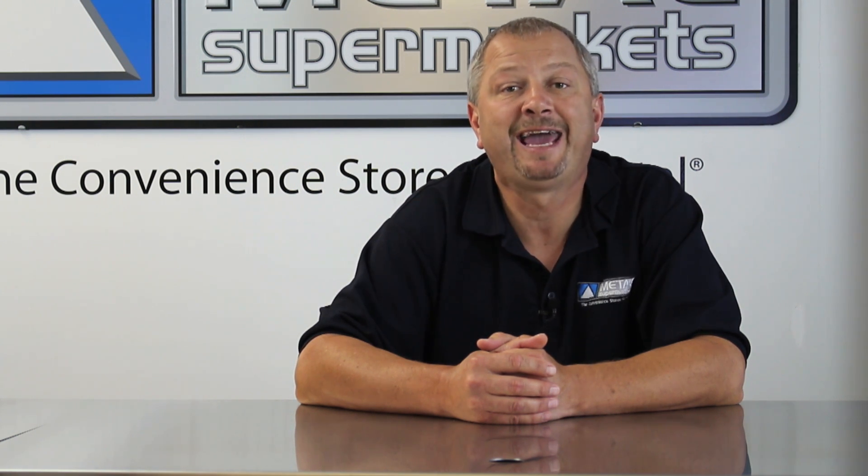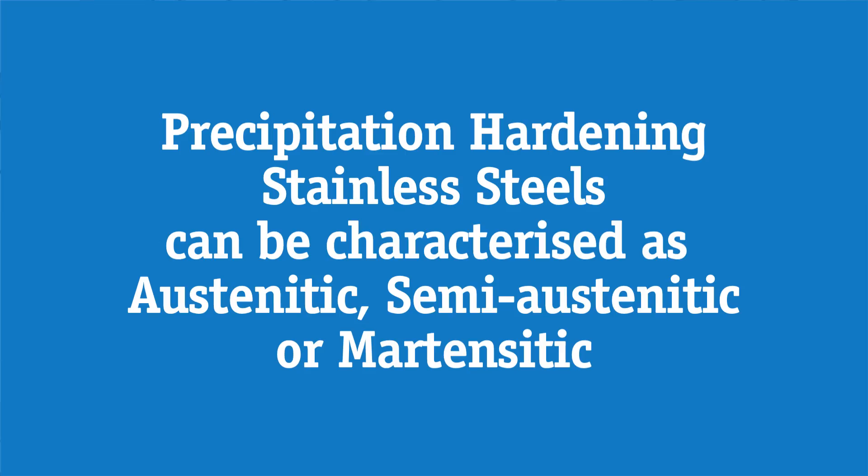Precipitation hardening steels are chromium-nickel stainless steels that also contain alloying elements such as aluminum, copper or titanium. These alloys allow the steel to be hardened by a solution and aging heat treatment. They can be either austenitic or martensitic in the aged condition.